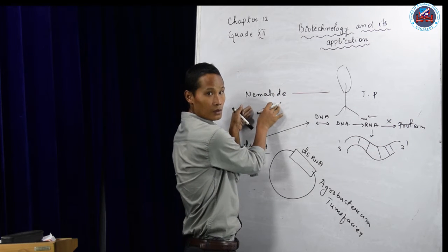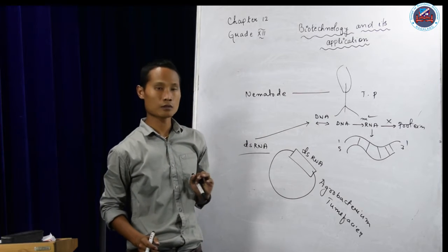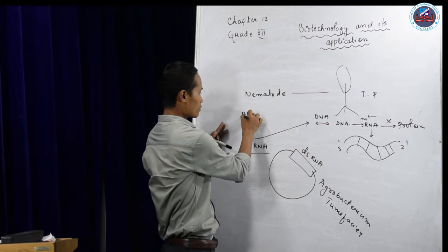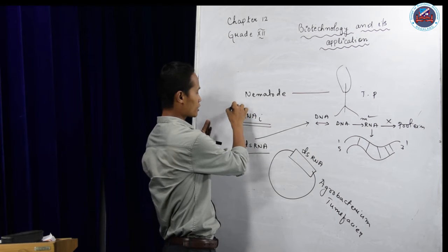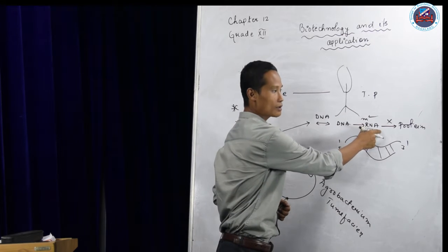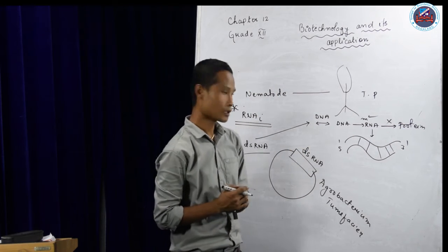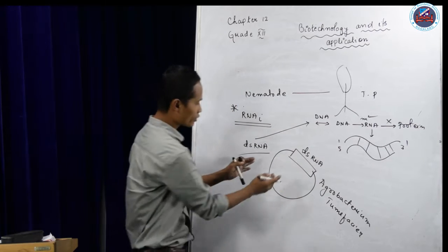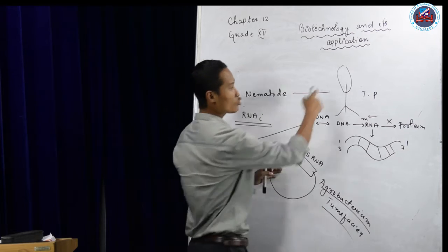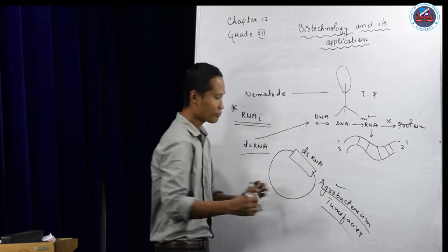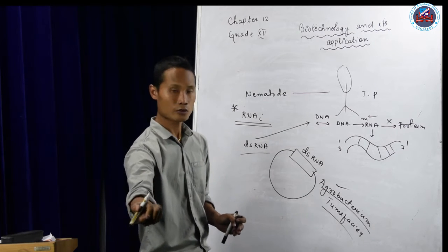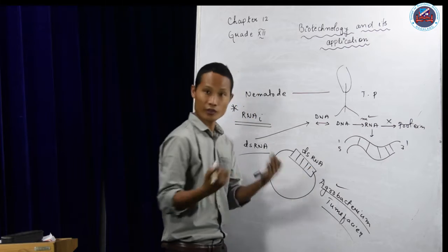This nematode is a parasite that infects the plant, example tobacco plant. With the help of RNA interference technology, the idea is to silence the mRNA, not allowing them to produce protein. How to do that? We take a cloning vector called Agrobacterium tumefaciens, and we allow the plant to be infected with it. This Agrobacterium infects plants and produces tumors in plants. So we introduce our gene of interest.